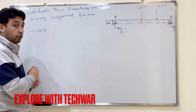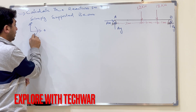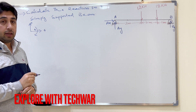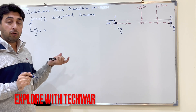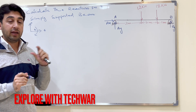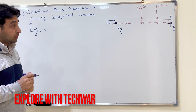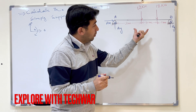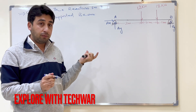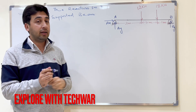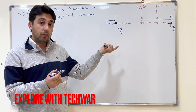Before starting, I will set my sign convention: rightward forces are positive, upward forces are positive, and clockwise moments are positive. Always establish your sign convention before solving. Now, this simply supported beam is at equilibrium, so we can apply the conditions of equilibrium.